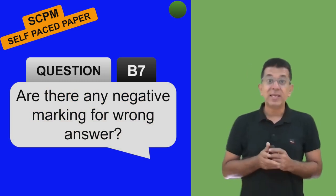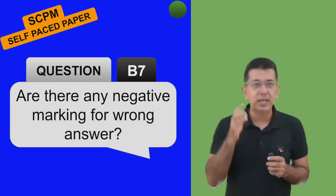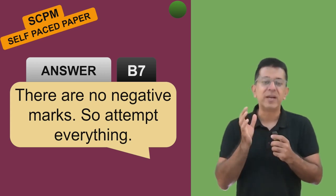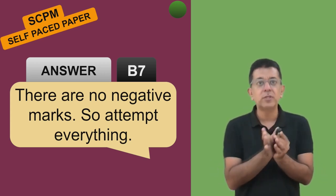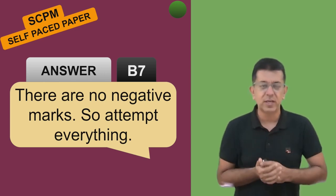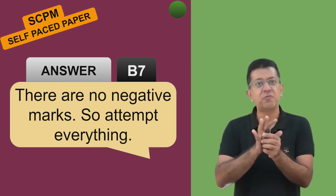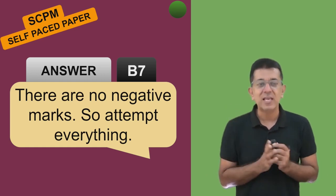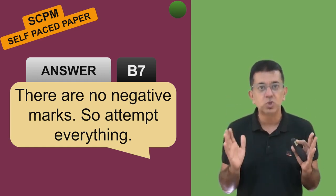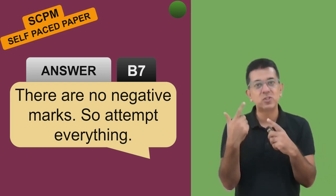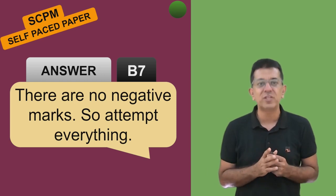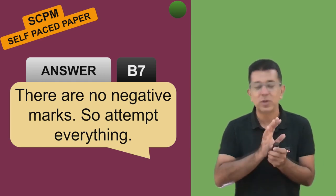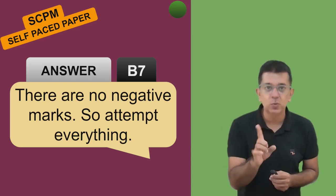Are there any negative markings for wrong answers? As of now, ICAI has clarified there are no negative marks, so please attempt everything - sometimes luck might work. Students who have given the examination told me that questions come different for everybody. ICAI has prepared more than 2000 questions and they get rotated for every student. So there is no point asking your friend what chapters came - prepare properly instead.